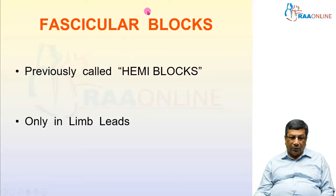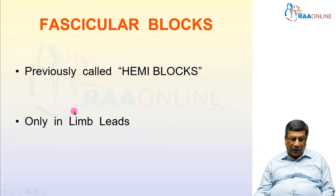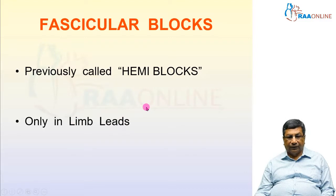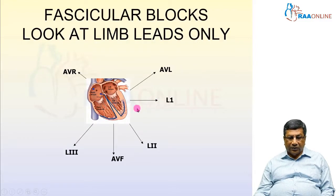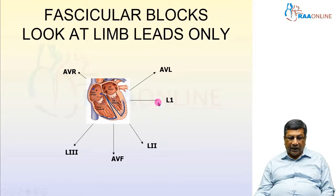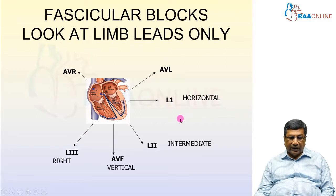Because fascicular blocks produce abnormal axis, we are not going to look at the chest leads for diagnosis — we are going to look only at the six limb leads: L1, L2, L3, AVR, AVL, and AVF. In the diagram showing all six limb leads positioned around the heart: L1 is horizontal, L2 is intermediate, AVF is vertical, L3 is right, AVL is left, and AVR is the no-man's-land lead.